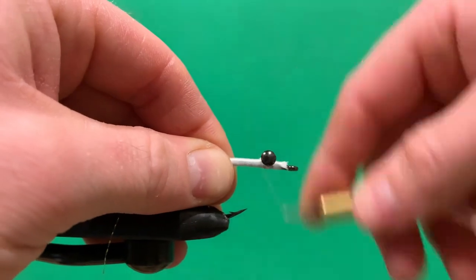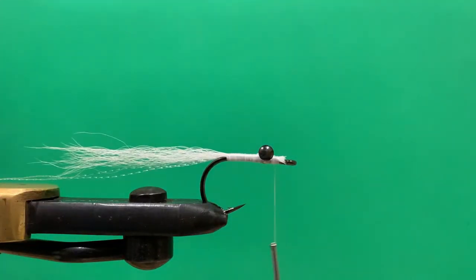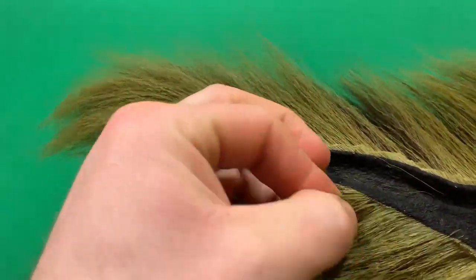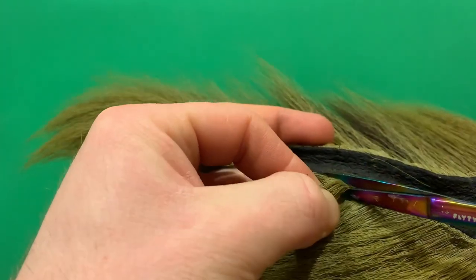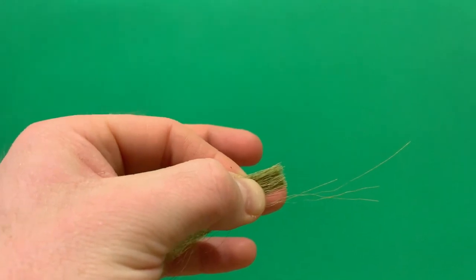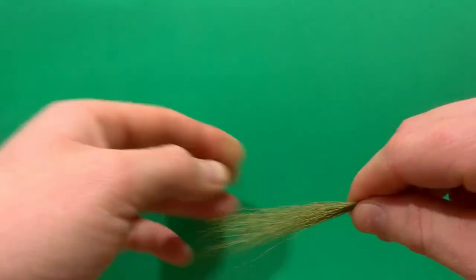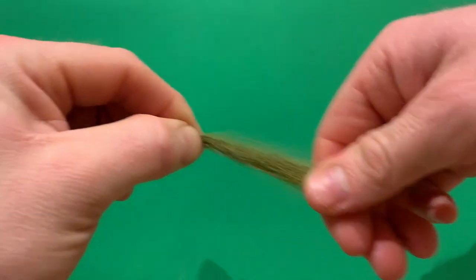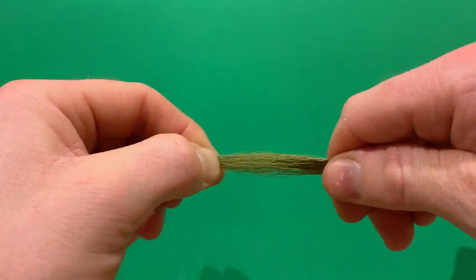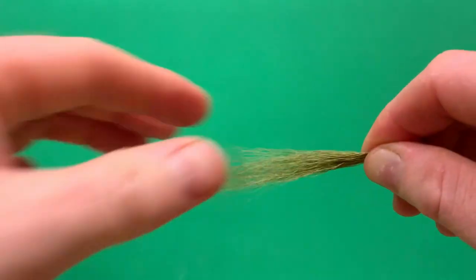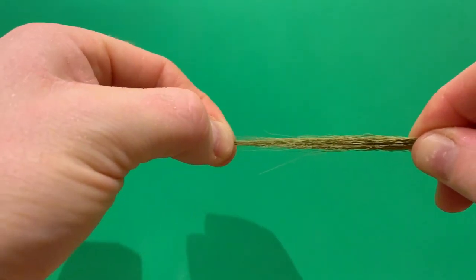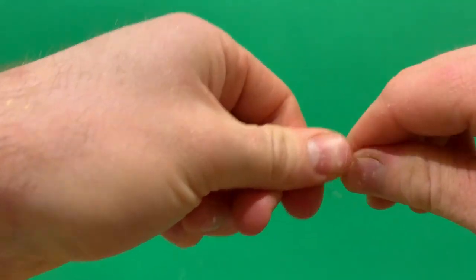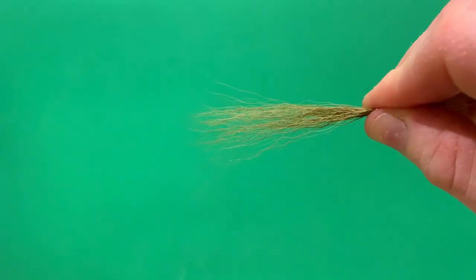We'll bring the thread to the front of the eyes and get the olive bucktail ready. Just like with the white, grab a small clump of fibers and cut them right near the base of the bucktail. Same thing—grab them a little over midway down, pull out all the small short fibers and underfur from your bunch, and then stack the hair.